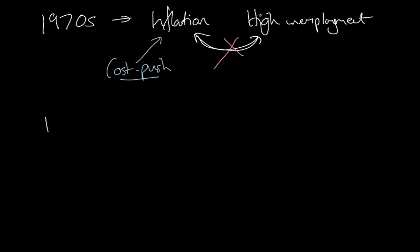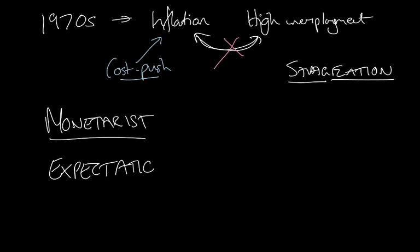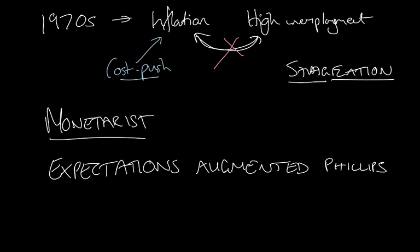It did mean that we had to update our view on the Phillips curve, and this is where the monetarist school of thought came in. We saw the monetarists when it came to the Fisher equation and the belief that money is neutral. The monetarists — led by Milton Friedman — basically developed the Phillips curve, tried to bring it up to date and modify it so it could explain this coincidence of inflation and high unemployment, something that we call stagflation — stagnation and inflation at the same time.